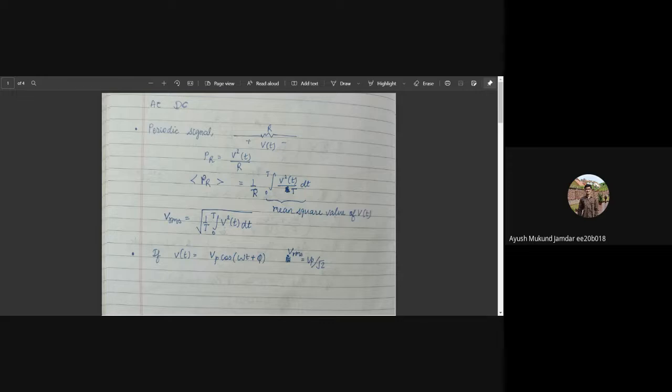Where capital T is the time period of the periodic signal, we'll get the average power in one period of the signal. This is where we introduce the root mean square voltage. We define VRMS as equal to square root of 1 by T integration zero to T of V squared of T dt. The application of VRMS can be seen from the average power, that if VRMS is applied to the resistor, then VRMS squared by R will directly give the average power.